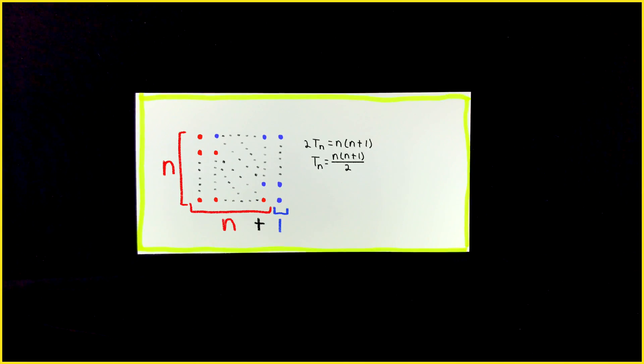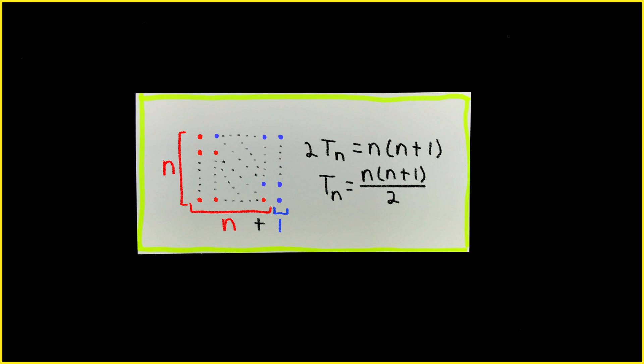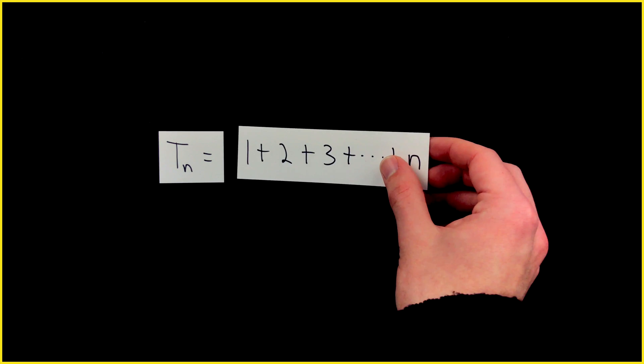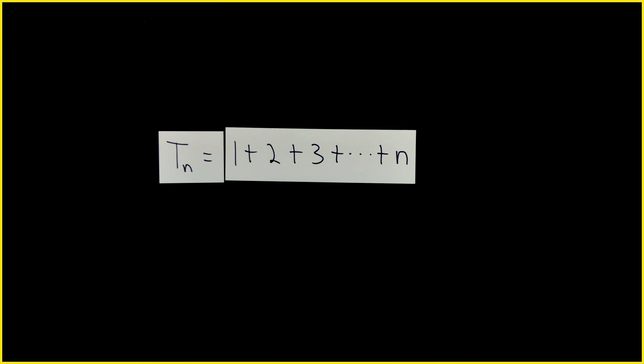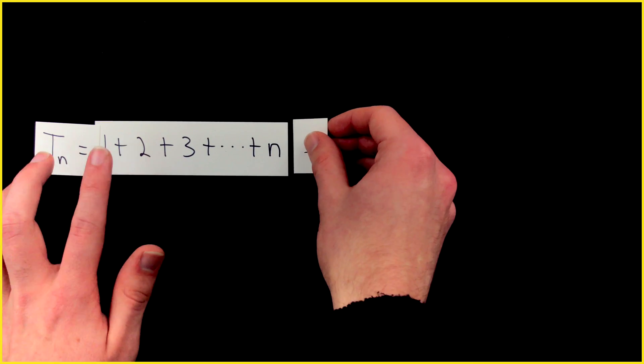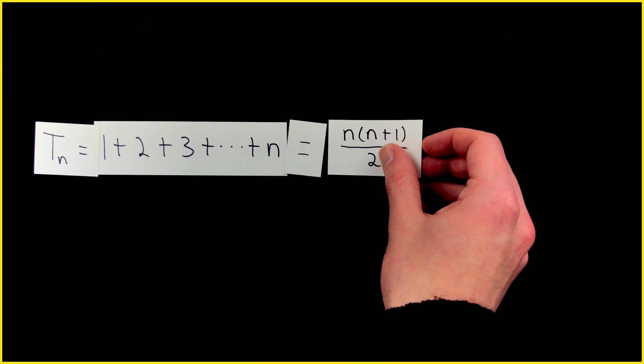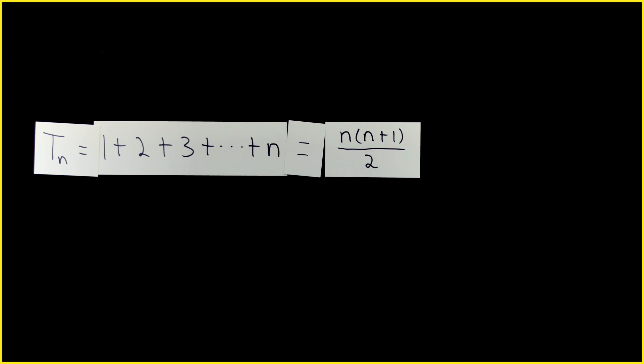and lay it next to the first right triangle to create a rectangle that has n plus one columns of n dots each. Thus, two copies of Tn is n times n plus one, and so Tn is n times n plus one over two. So the nth triangular number is equal to one plus two plus three up to n. But now we know it's also equal to n times n plus one divided by two.